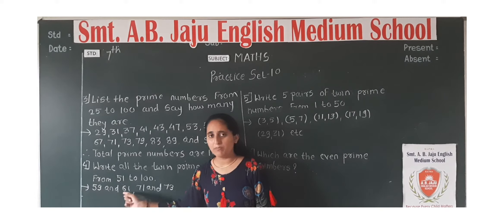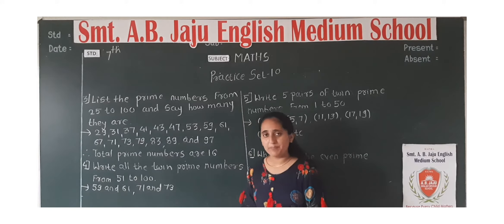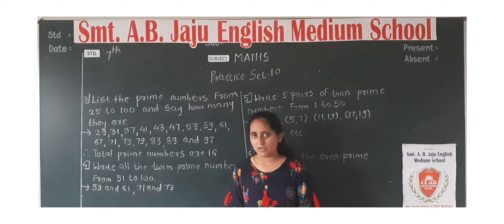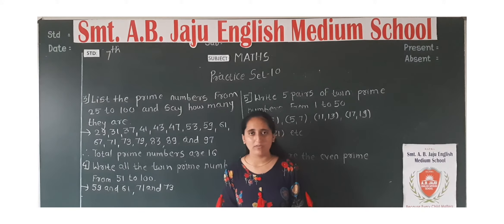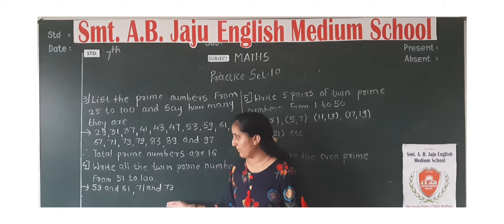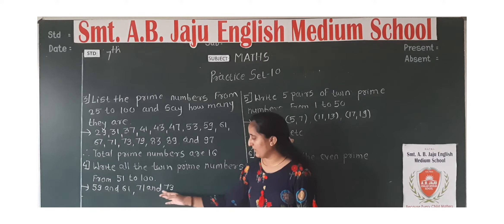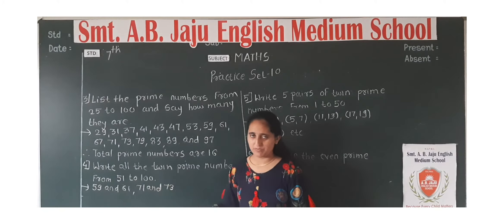The twin prime pairs: first pair is 59 and 61 — their difference is 2 and their common factor is 1. Second pair is 71 and 73 — common factor is 1. So there are 2 pairs of twin prime numbers between 51 to 100: 59 and 61, and 71 and 73.